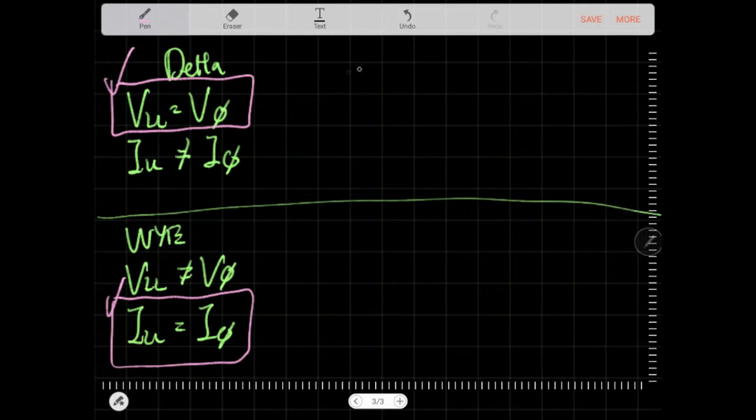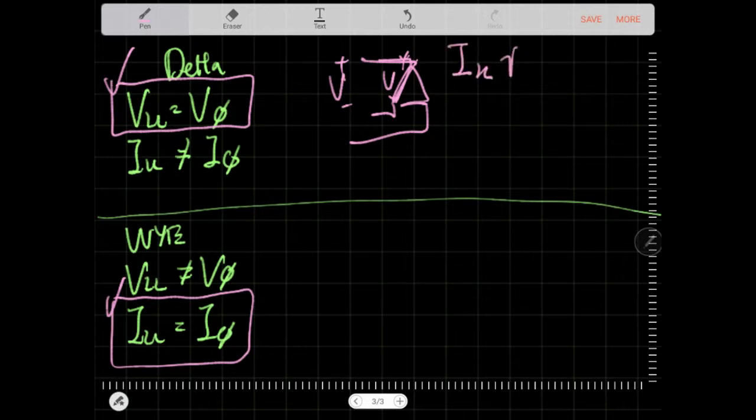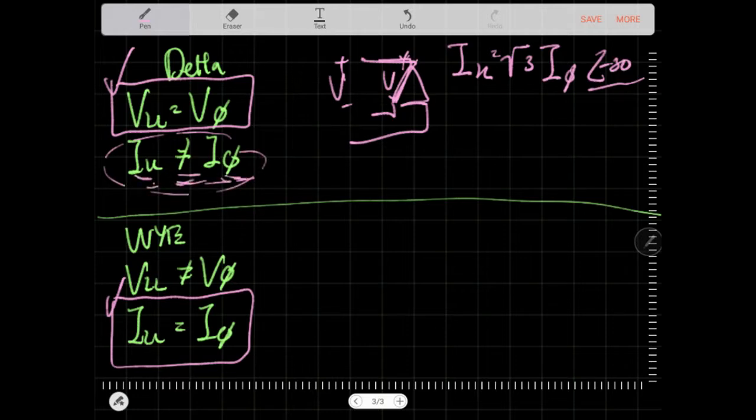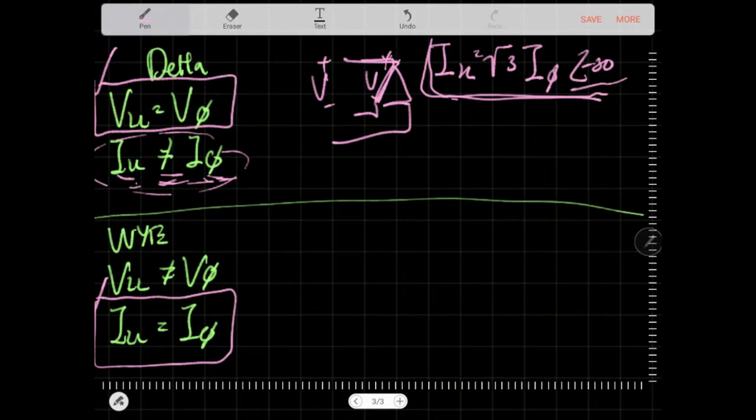So in delta, the voltage is the same voltage, but the current is not the same. So we have to look at the current. The formula given to us is that the line-to-line current is root 3 times the phase current. The minus 30 degree doesn't really matter at all. Just leave it there. So in this case, that is what you want to maintain. You can touch this one.